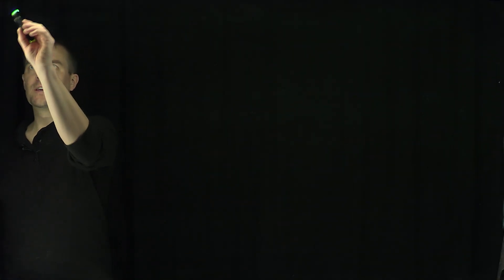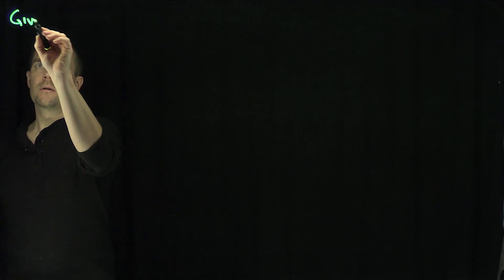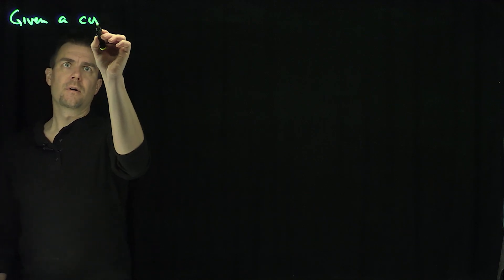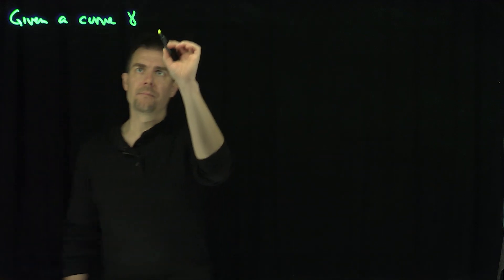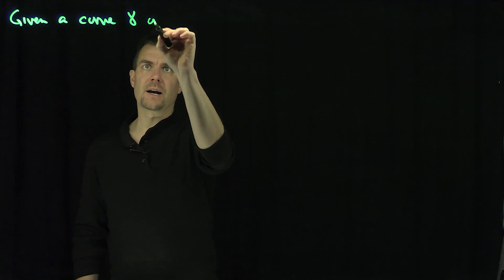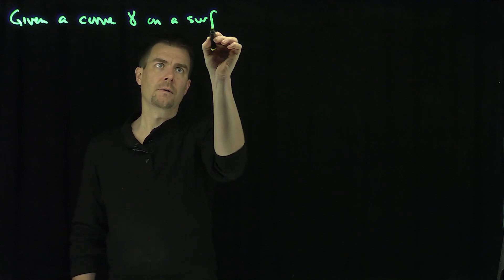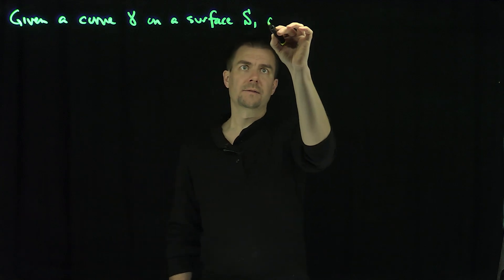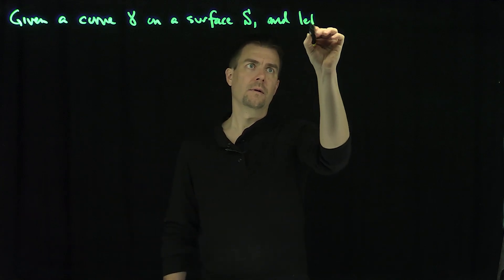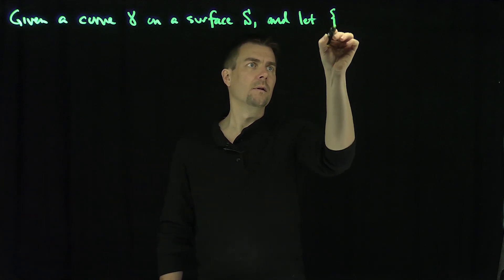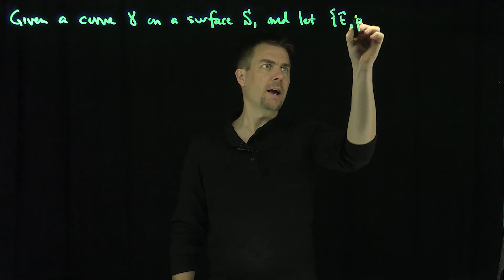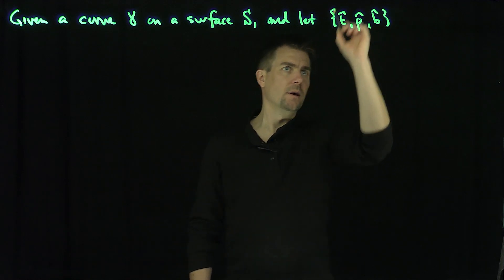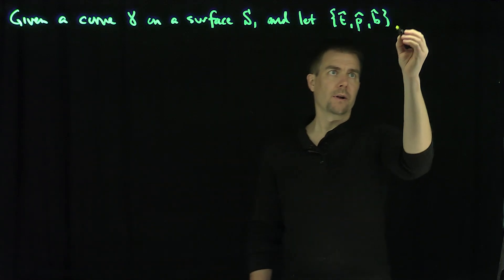Hello, students. In this video, we'll discuss geodesic torsion of a curve. Let's be given a curve gamma on a surface S, and let t-hat, p-hat, and b-hat be its Frenet-Serret frame.